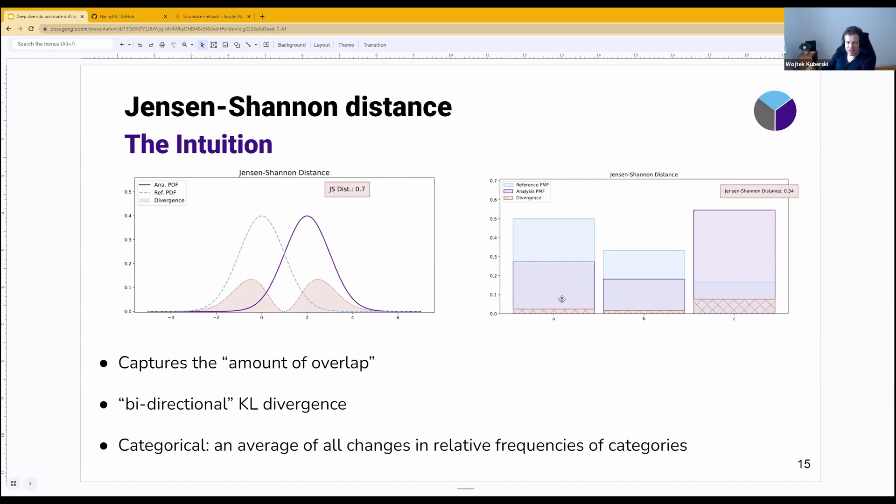And what we see is we take the average of that, and that is our divergence measure, which then, if I remember correctly, we take the square root of to get the distance.